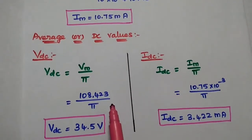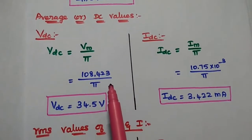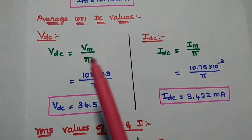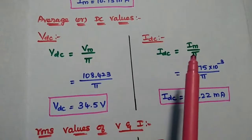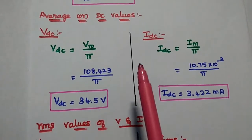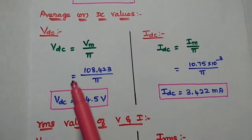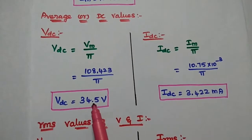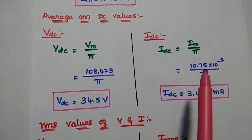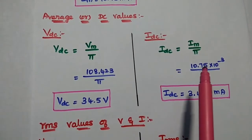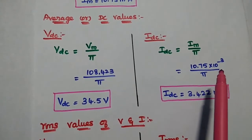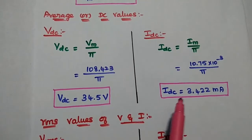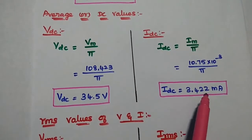The average DC values are found using Vdc = Vm/π = 108.423/π = 34.5 V, and Idc = Im/π = 10.75 × 10⁻³/π = 3.422 mA.